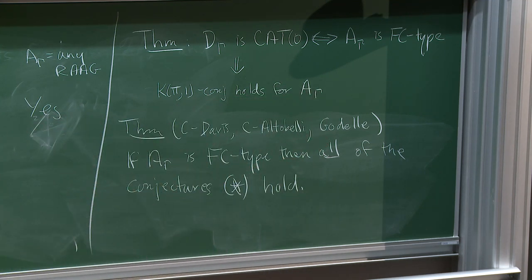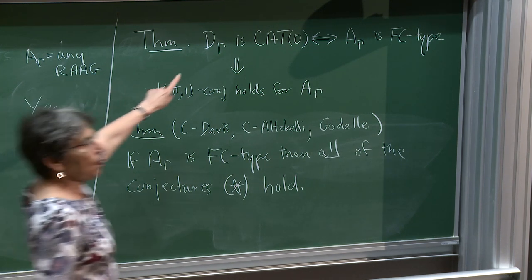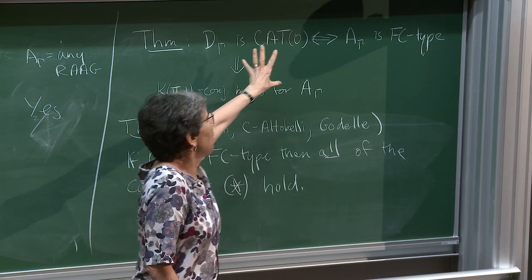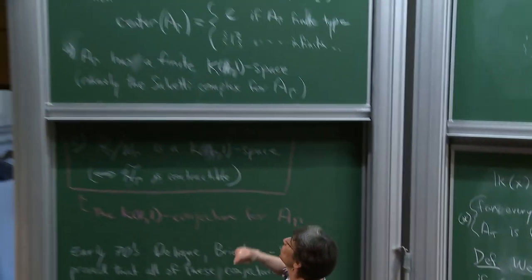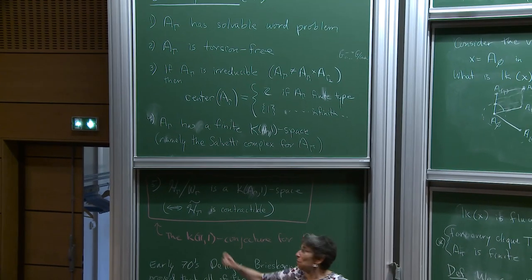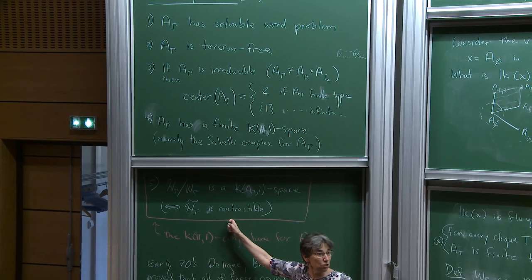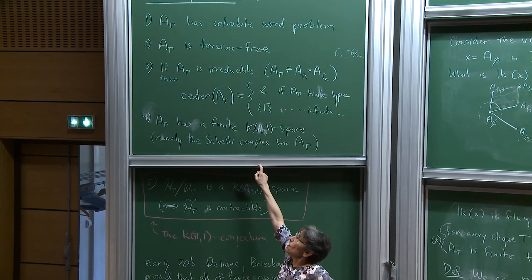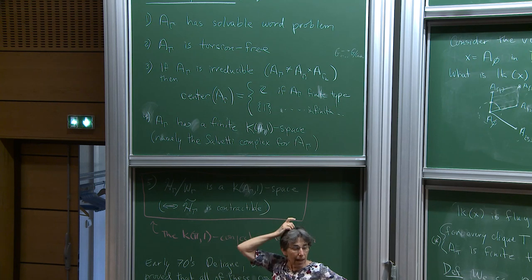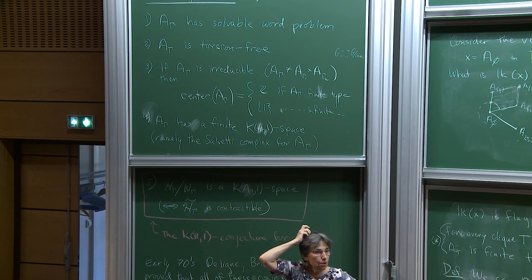I'm going to say a little bit about how you prove the others, because they all sort of depend on this one. So we know the K(π,1) conjecture is true. Why is there a finite K(π,1)? For that, I need to tell you what the Salvetti complex is.